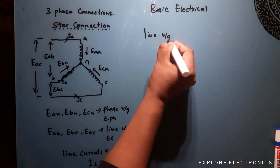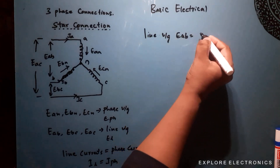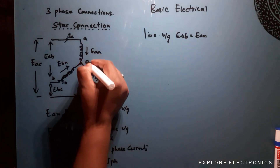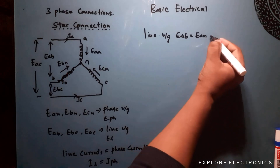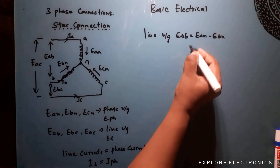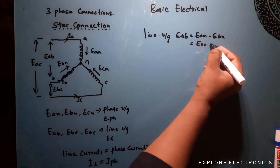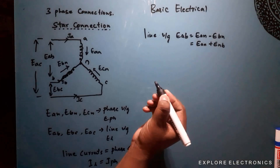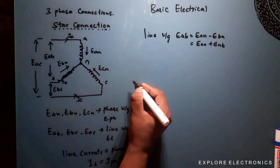The line voltage EAB can be written as EAN minus EBN, since EBN is in the opposite direction. This can also be written as EAN plus ENB. So let us draw the vector diagram for this.